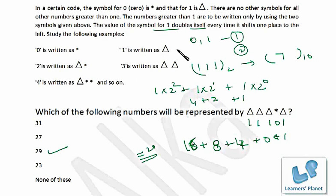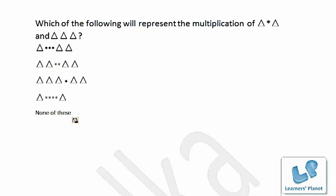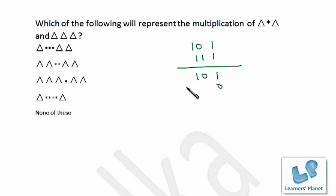You just need to practise with the binary number system. This coding could be given in some other number system too, so be clear with all number systems — the same rules apply. Now the next problem: which of the following represents the multiplication of these two numbers? We've already discussed multiplication in binary. It's 101 multiplied by 111. Writing it out just as in decimal multiplication: 101 × 111.